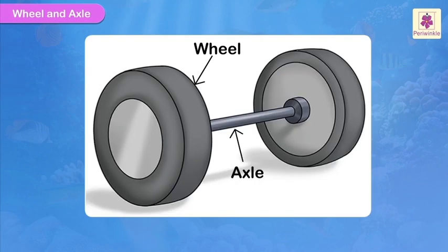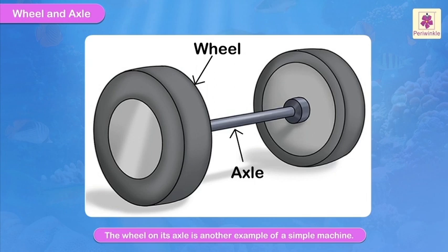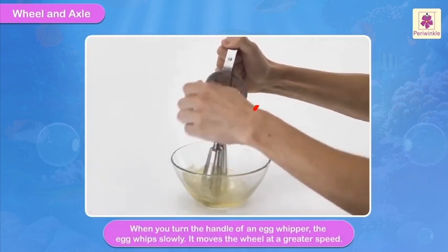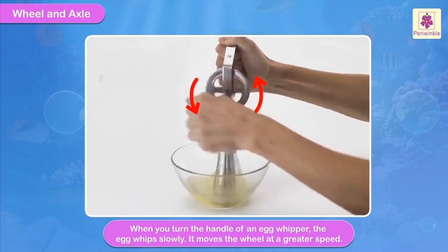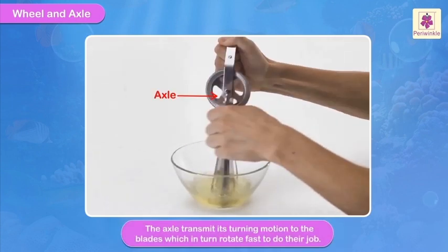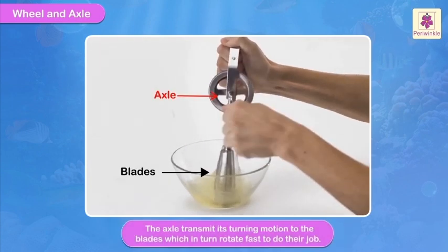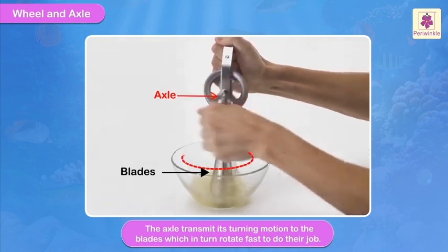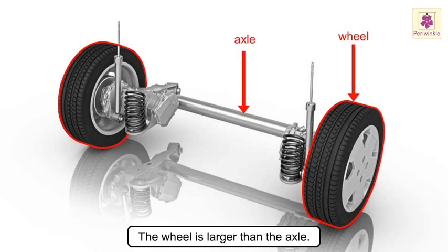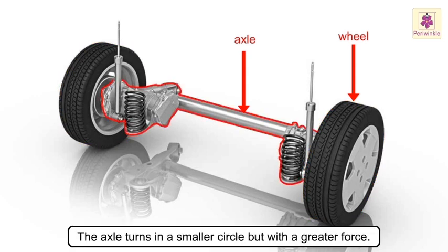Wheel and axle. The wheel on its axle is another example of a simple machine. An axle is the rod to which the wheels are connected. When you turn the handle of an egg whipper, the egg whip moves slowly but the wheel moves at a greater speed. The axle transmits this turning motion to the blades, which in turn rotate fast to do their job. The wheel is larger than the axle; the axle turns in a smaller circle but with a greater force.